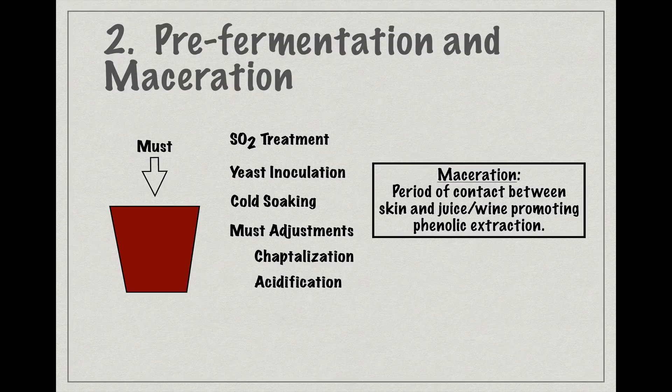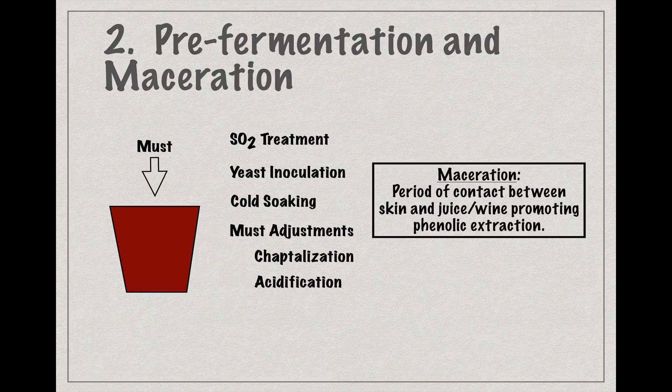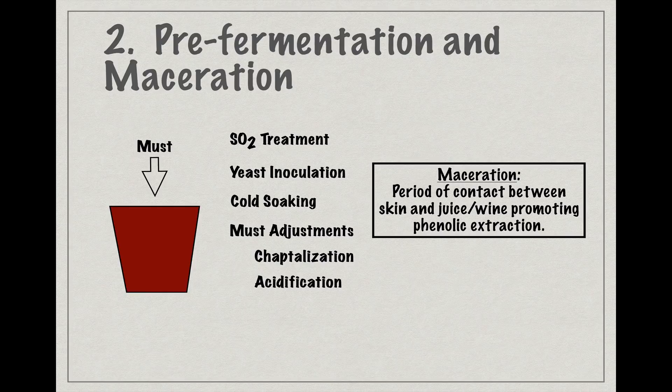Finally, if any adjustments need to be made to the must, such as adding sugar, or chaptalizing to increase the final alcohol content, or acidifying the must if the grapes were overly ripe or otherwise low in acid, this is the best time to make those adjustments, contingent, of course, on whether those particular practices are legal where the wine is being made.